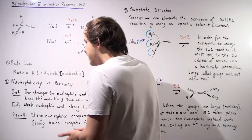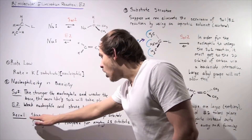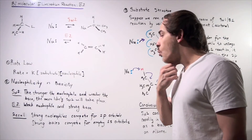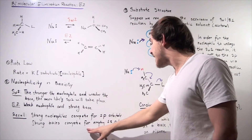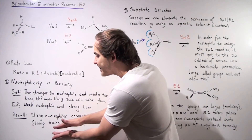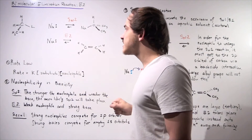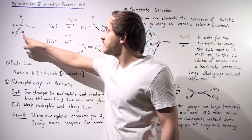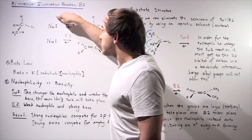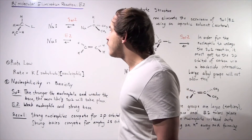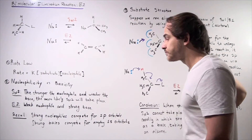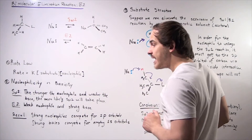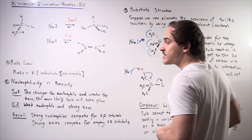Let's compare nucleophilicity to basicity. Strong nucleophiles are molecules that compete for the empty 2p orbital, while strong bases are molecules that compete for empty 1s orbitals. So they're related, but they're not the same thing. When our E2 reaction takes place, this nucleophile acts as a base competing for the empty 1s orbital of the H atom. On the contrary, this nucleophile acts as a nucleophile in the SN2 reaction competing for our empty 2p orbital.